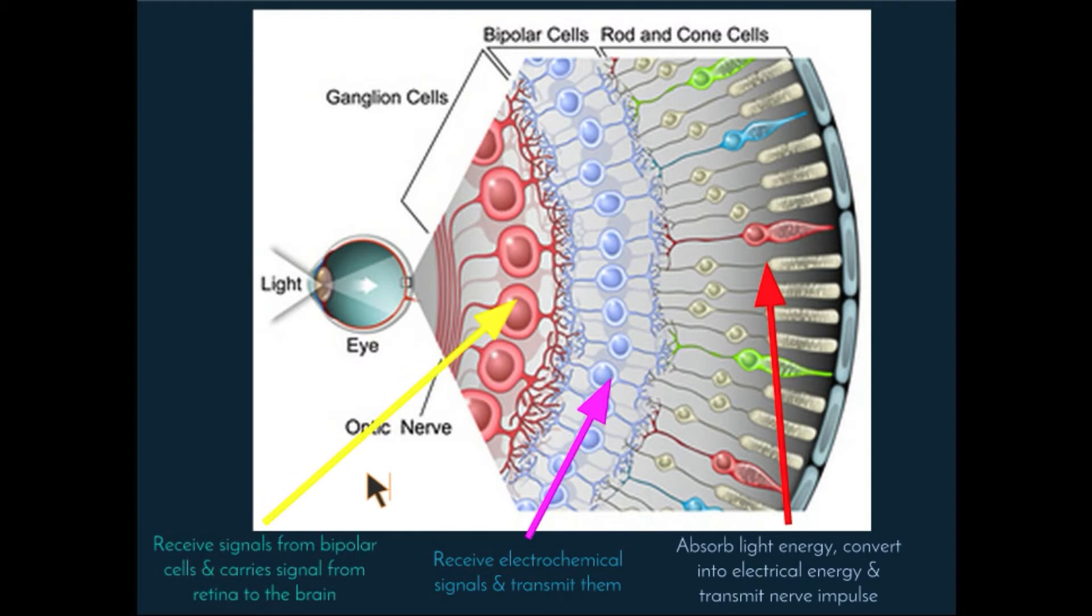The ganglion cell layer, in this layer, the cells receive electrochemical signals from the bipolar cells. The distal end of the ganglion layer is extended into long processes that go on to form the fibers of the optic nerve. So as we can see here, the distal end is the furthest end, and all of these distal parts of all of these ganglion cells converge to form the optic nerve. These neurons are responsible for carrying electrochemical signals from the retina all the way to the brain.